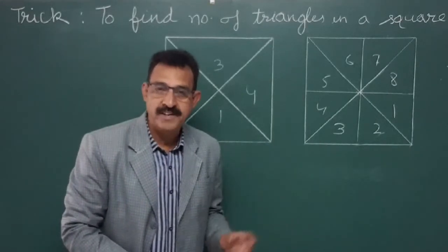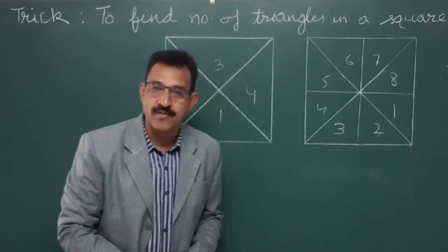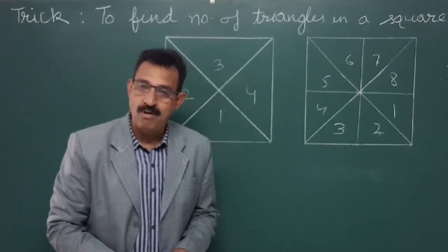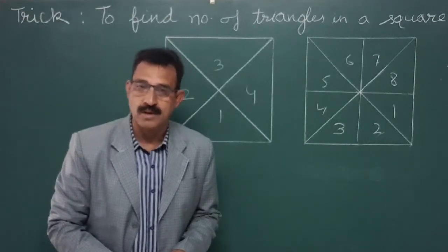Trick is to find the number of triangles in a given square. We know a square is a closed figure with all its four sides as equal.